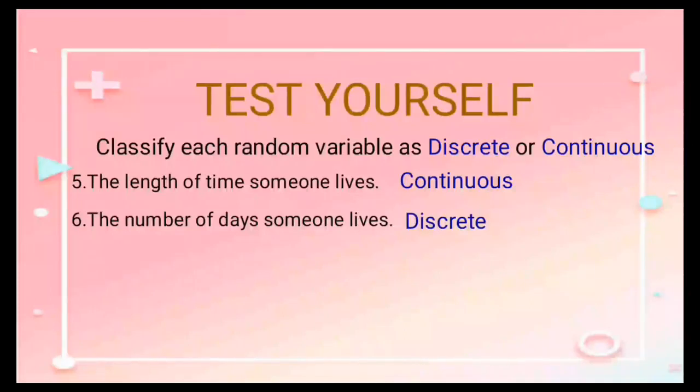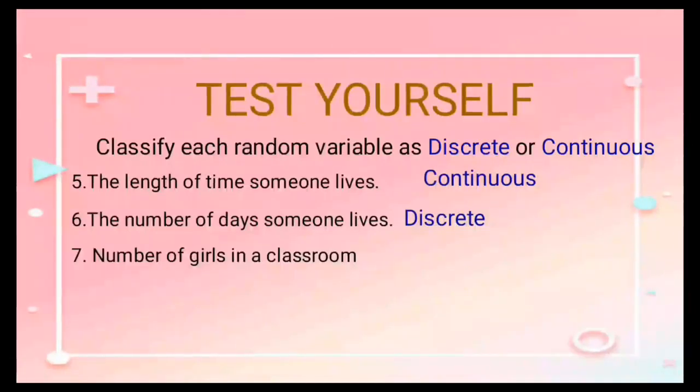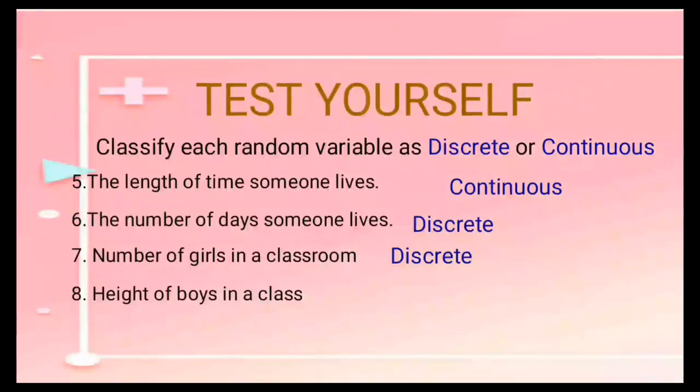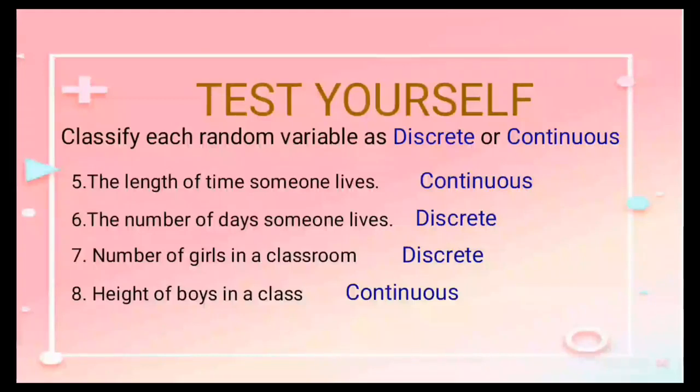So let's continue. Number seven: the number of girls in a classroom. It is discrete again. Number eight: height of boys in a class. It is continuous because you need to get measurement, so you will know the height of boys in a class.